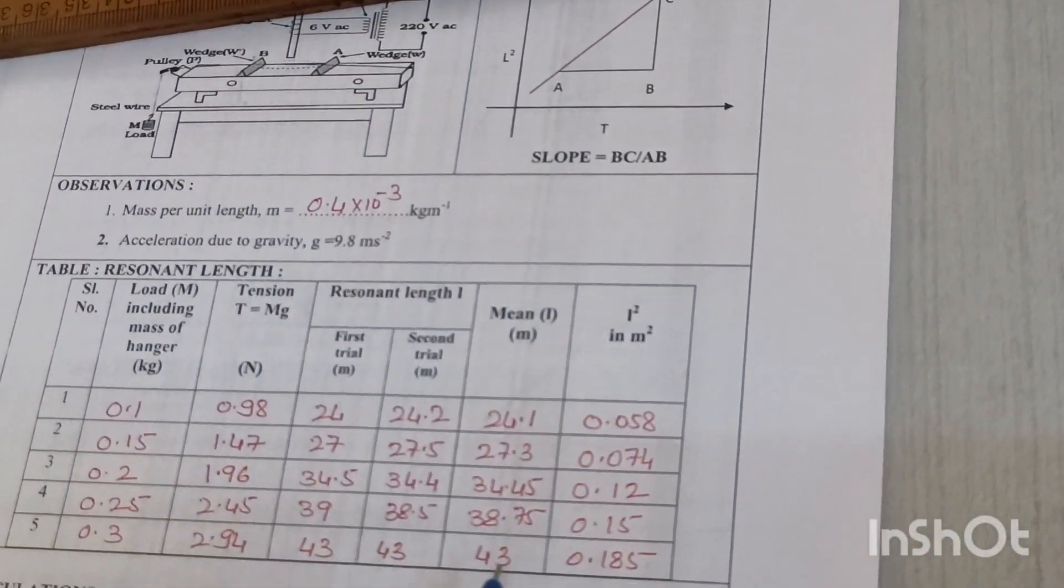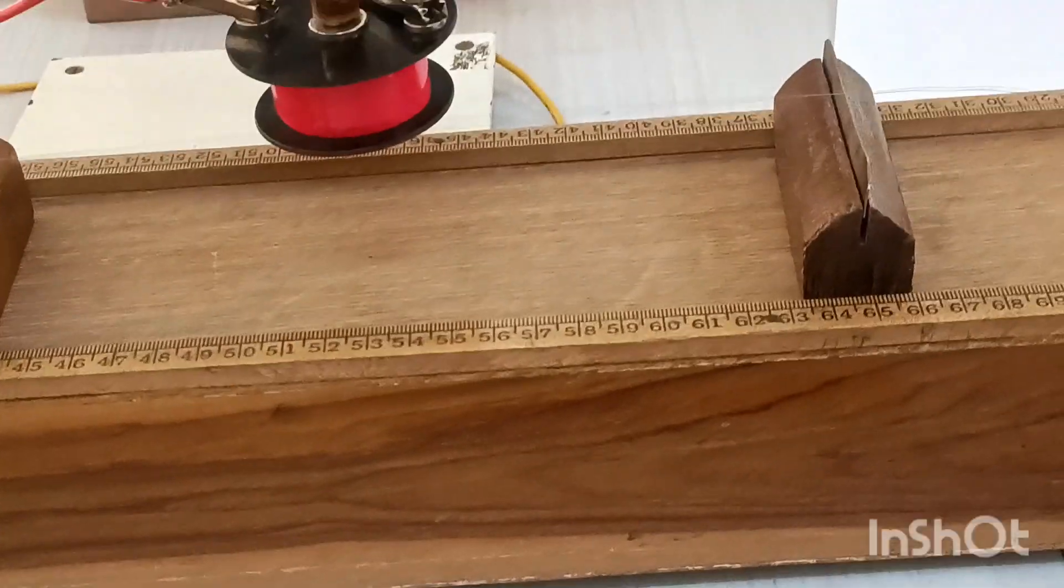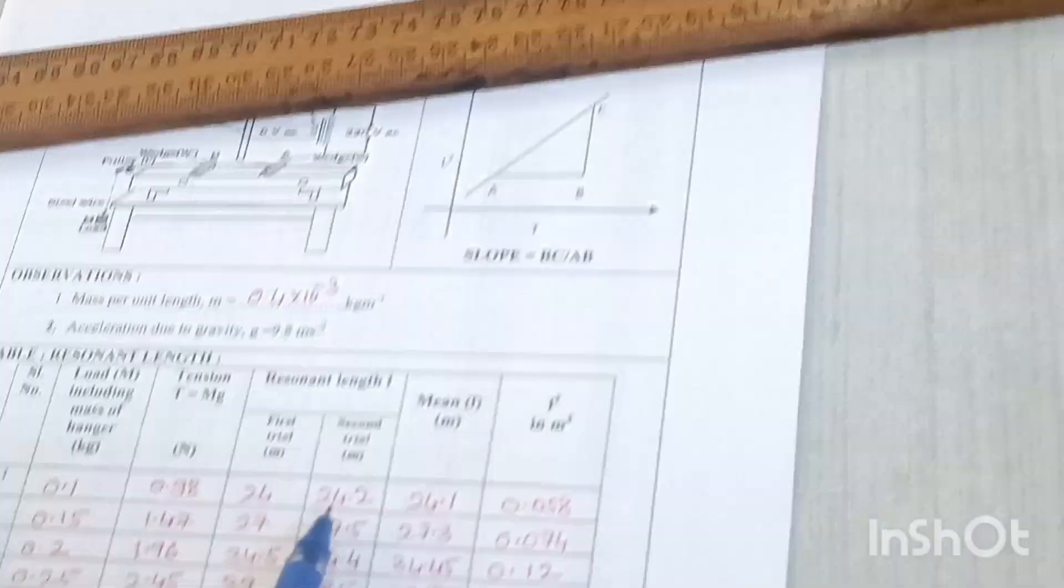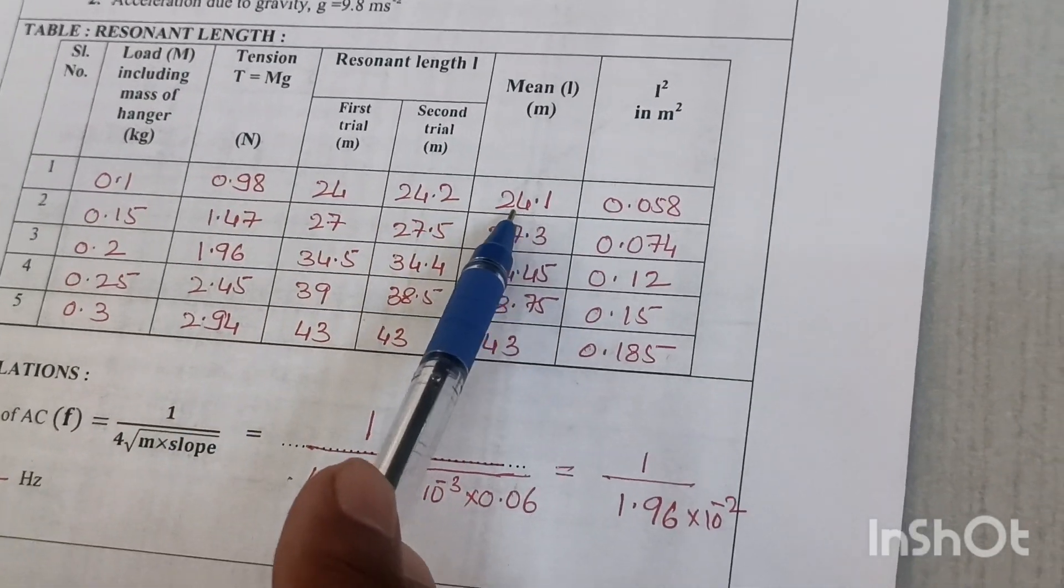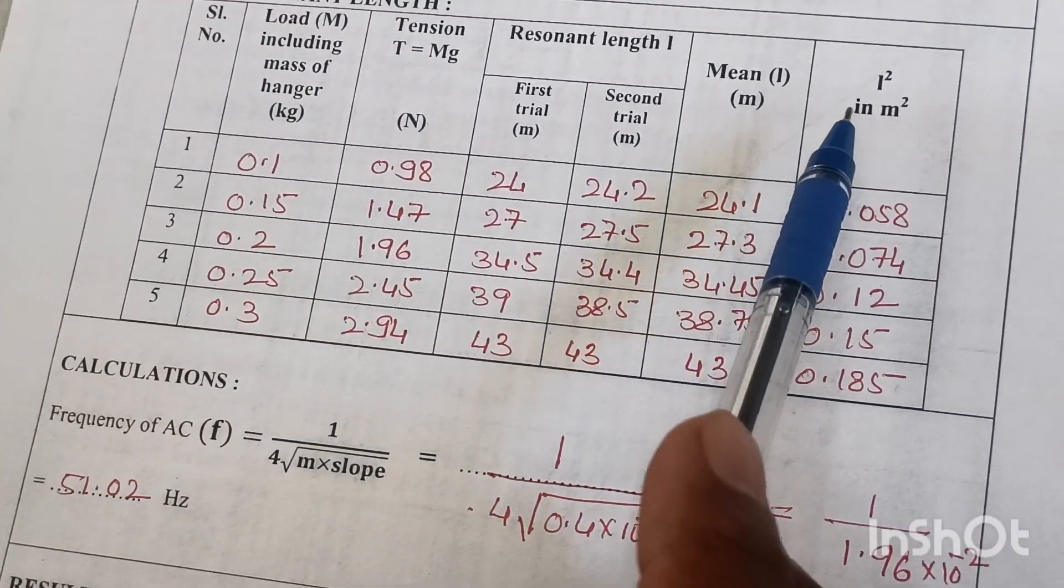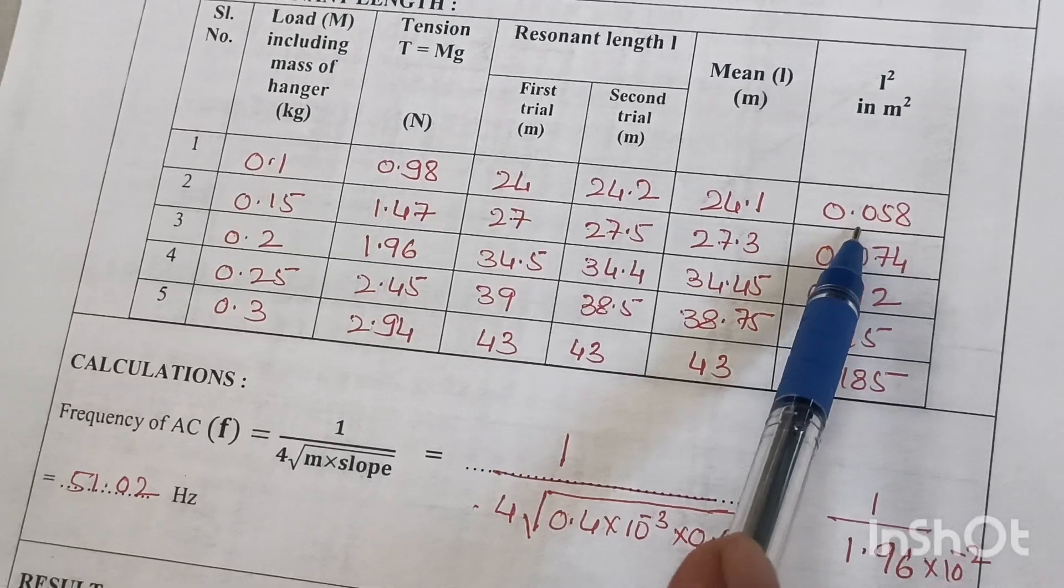The resonating length is verified by varying the length again. It is found to be 24.2 centimeters. The mean of these two values is 24.1 centimeters, and the square of this length is 0.058 meter squared.